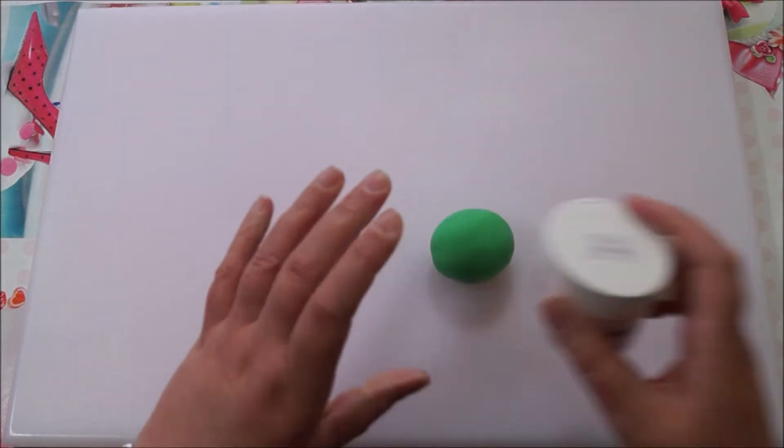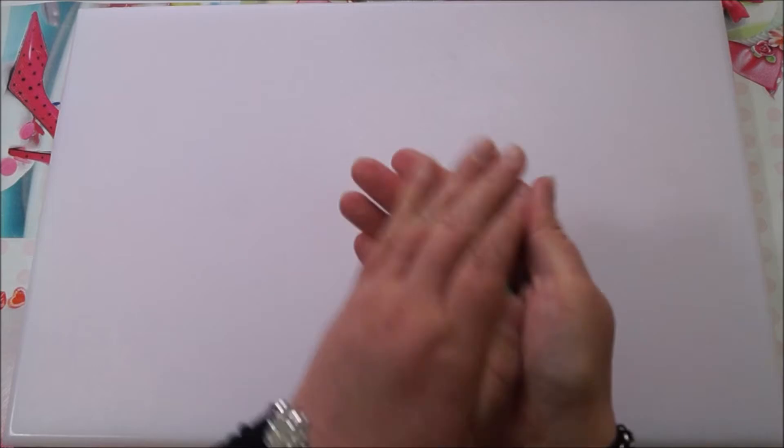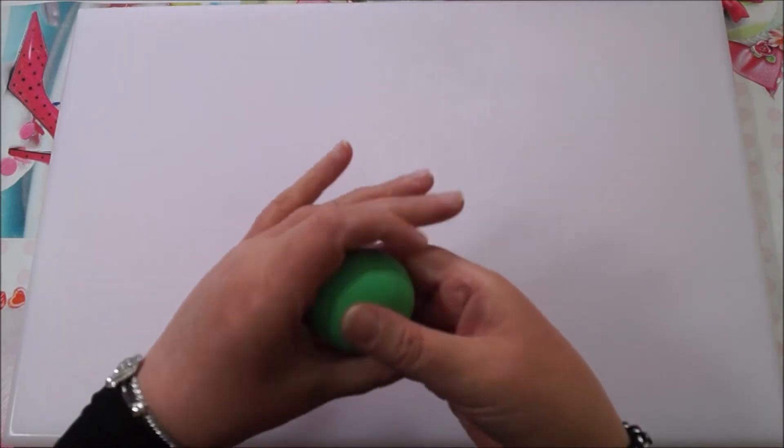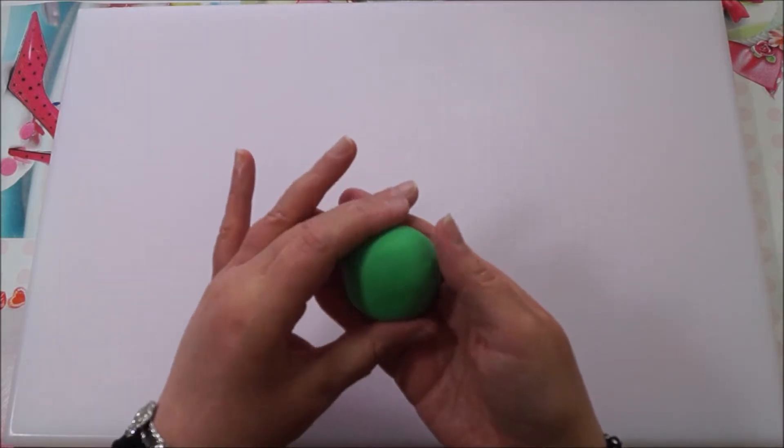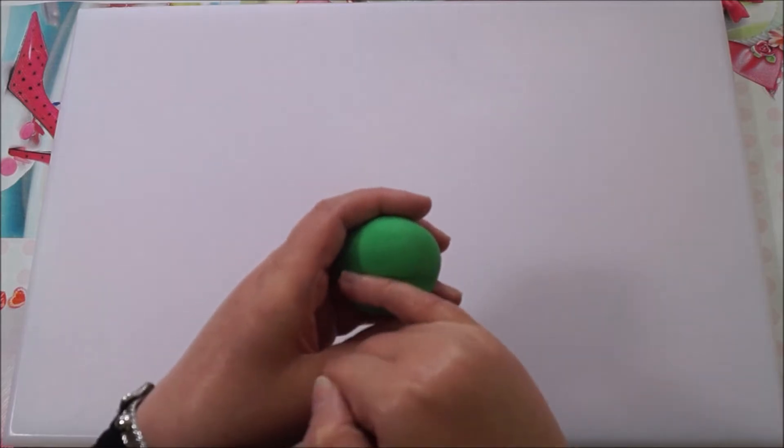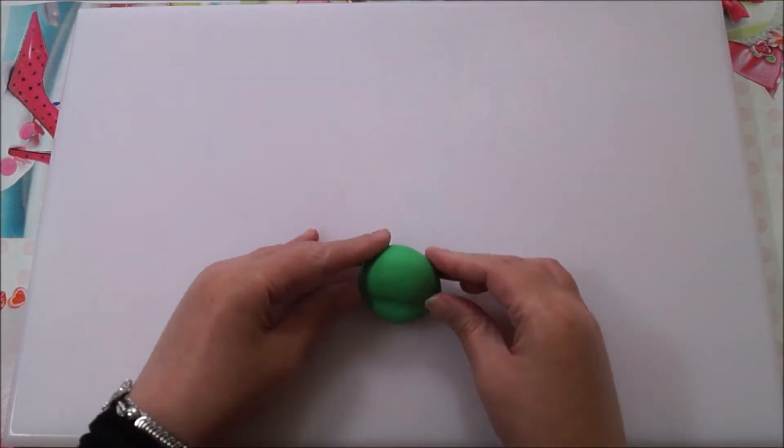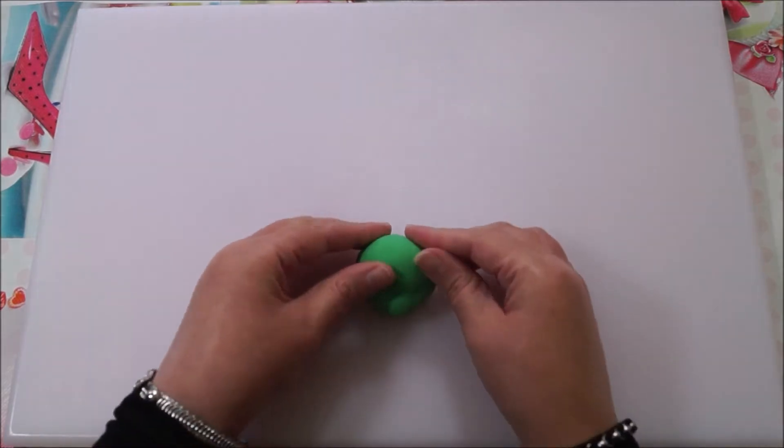I've mixed about half a teaspoon of the tylo powder with the green fondant, which will ensure that it sets firm. Mold and shape your green fondant into a round circle, then using your finger just make an indentation for the mouth and nose area.